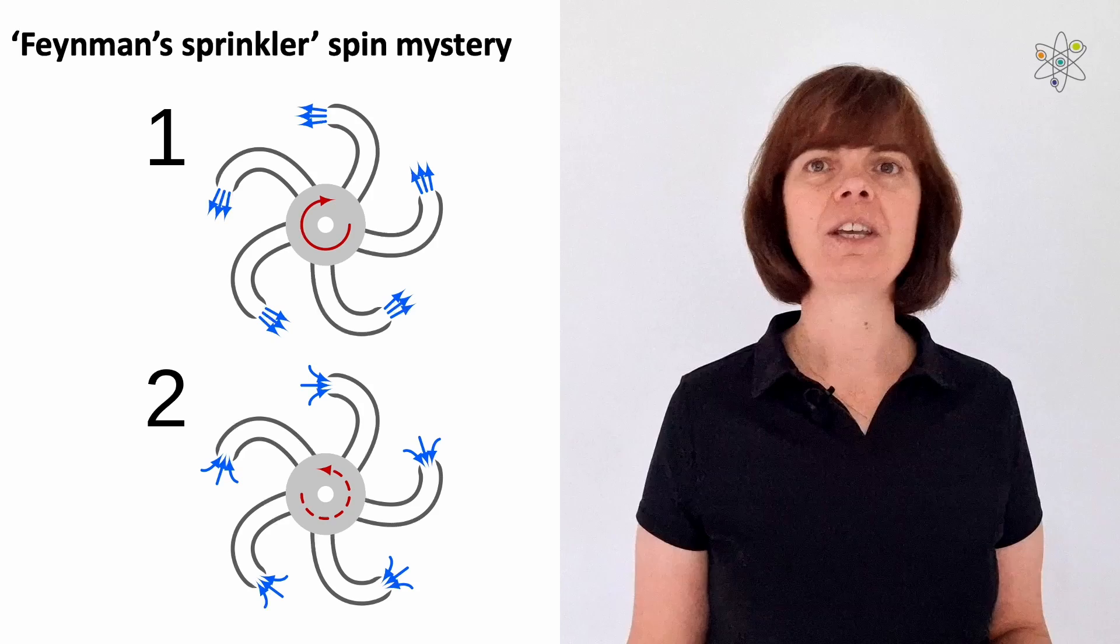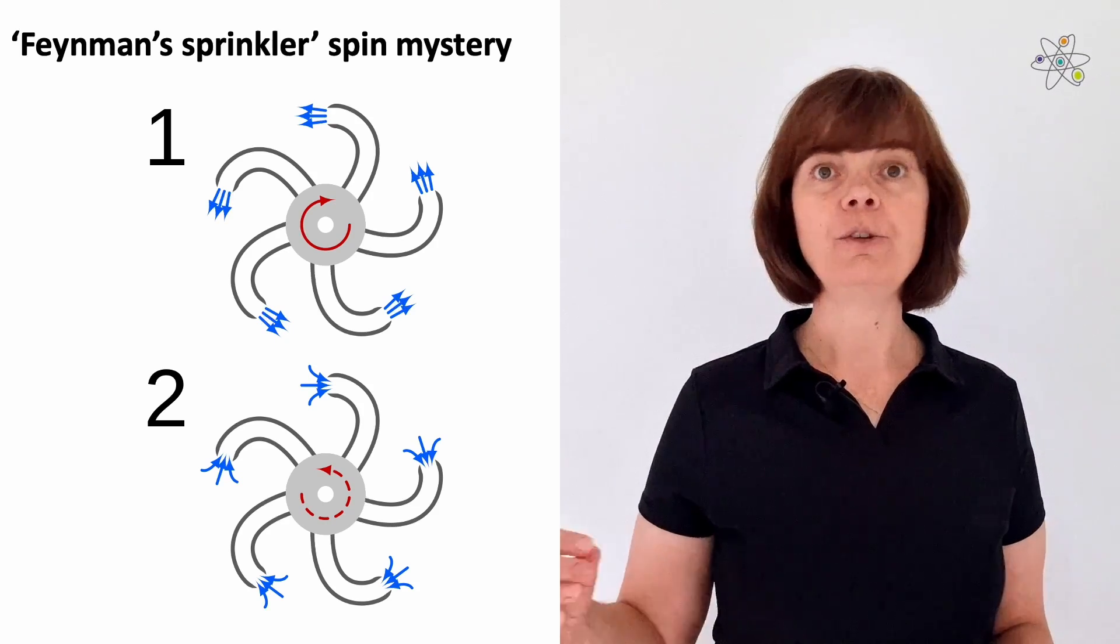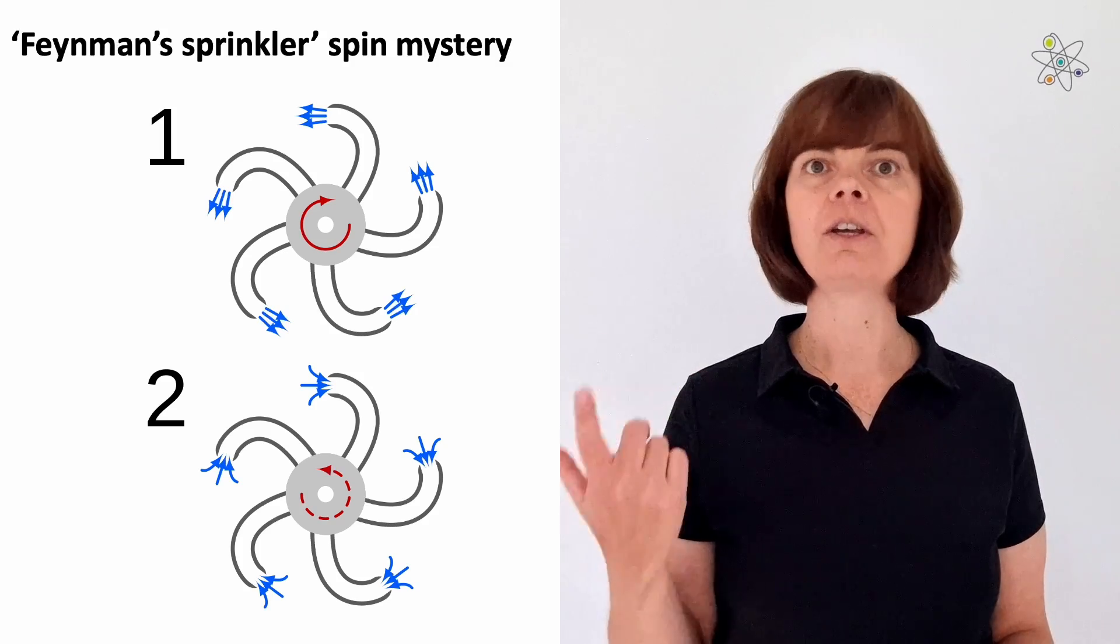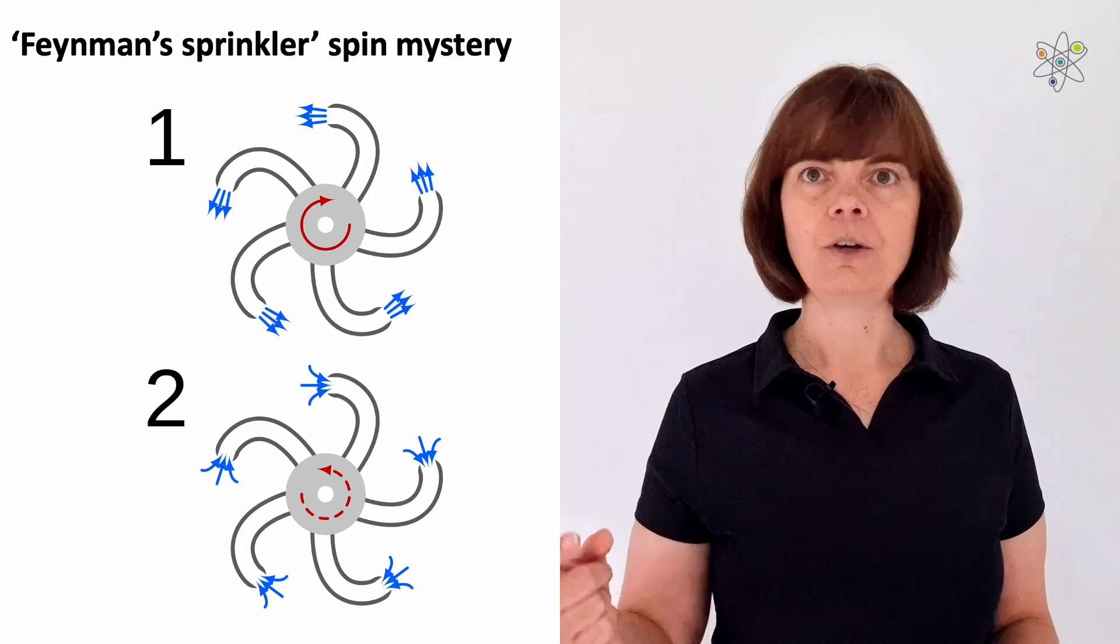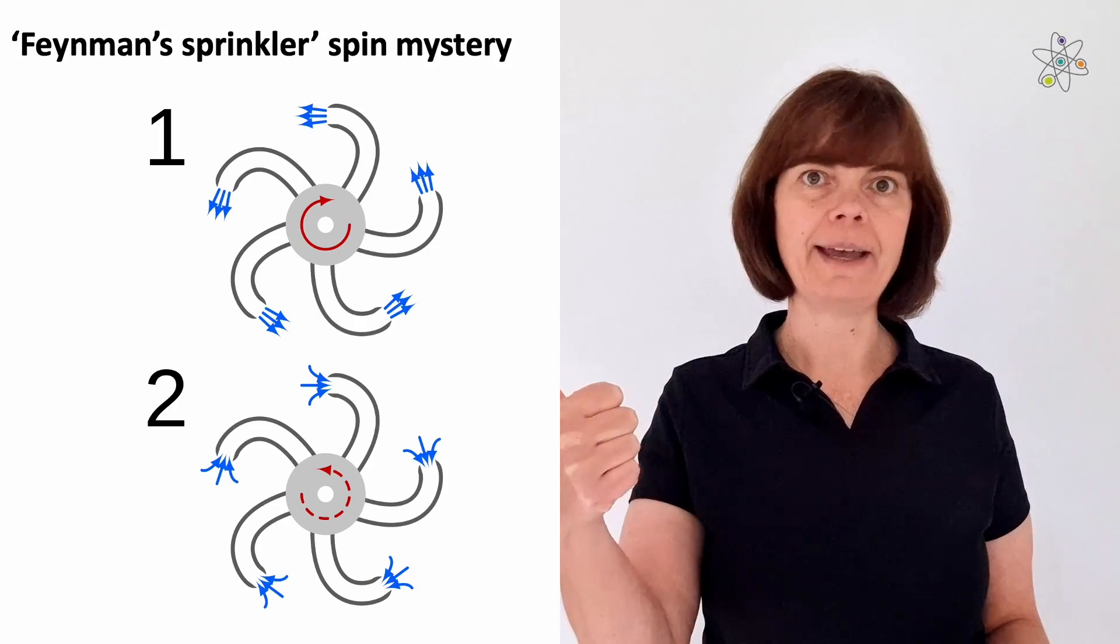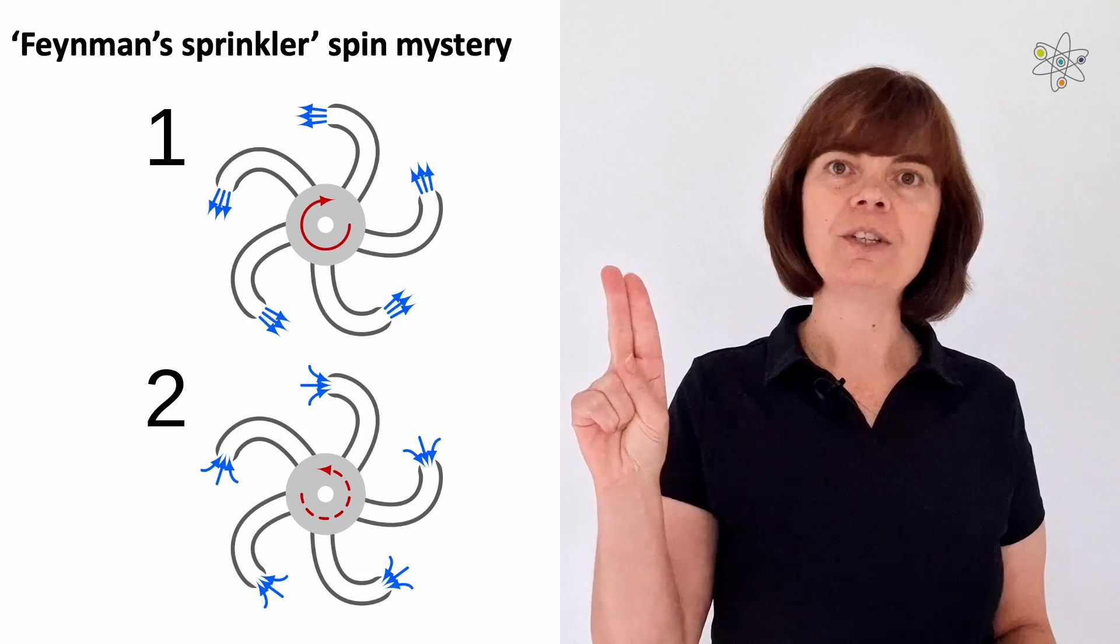Now, the question is this. If you had a water tank and you've submerged the sprinkler completely underwater and sucked water in instead of pushing it out, which way would it turn? Would it, one, turn in the direction that it does when you push water out into air, or two, would it turn the other way?